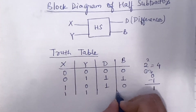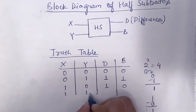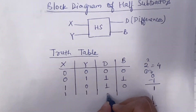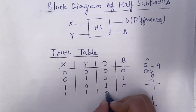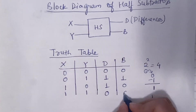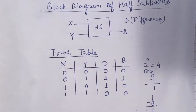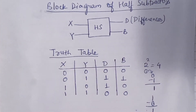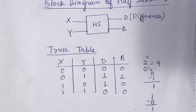For 1 minus 1, the difference is 0 and the borrow is 0. So this is the complete truth table for the half subtractor.